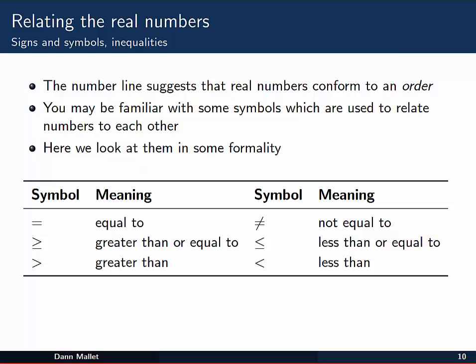The number line that we've seen in another video suggests that the real numbers conform to some sort of order. And that's quite true. The real numbers are an ordered set of numbers. Now, you might be familiar with some symbols which we use to relate numbers to each other, like the less than symbol and the greater than symbol, but here's a full set for us to look at now.